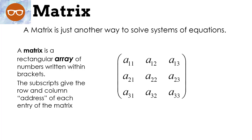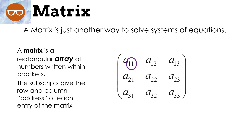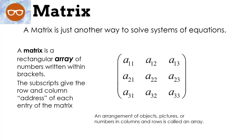A matrix is just another way to solve systems of equations. A matrix is a rectangular array of numbers written within brackets. The subscripts give the row and column address of each entry in the matrix. An array is simply an arrangement of objects, pictures, or numbers in columns and rows. This is an example of a matrix. Just to review: this is a row, and this is a column.